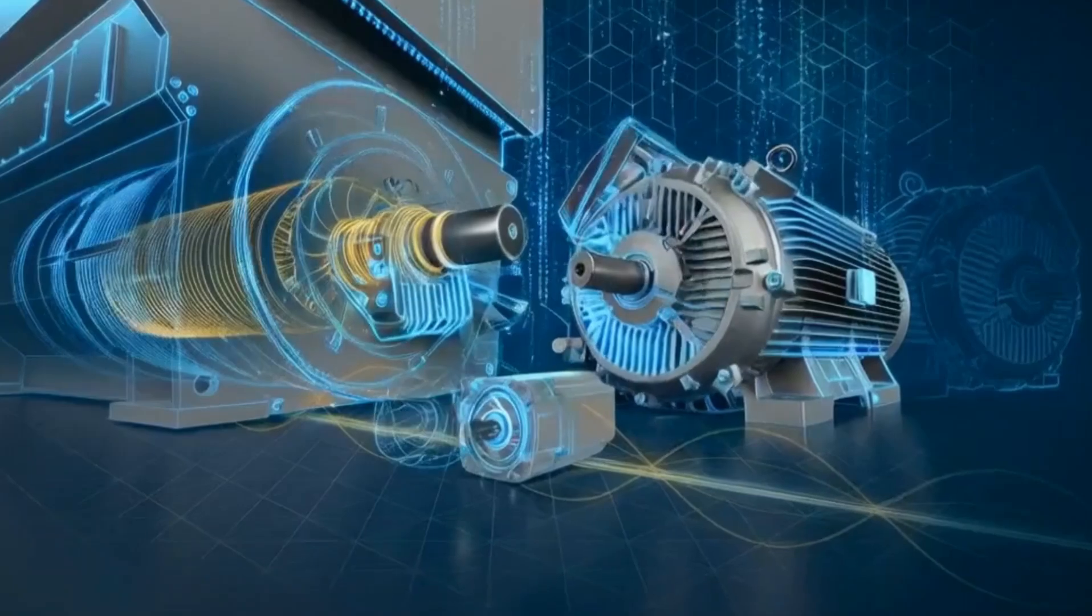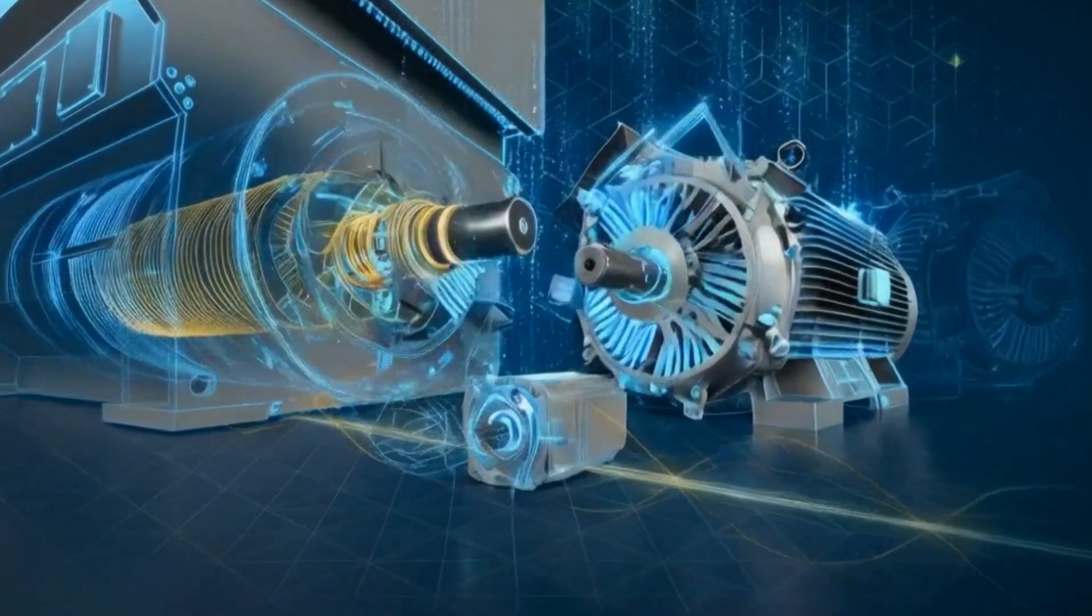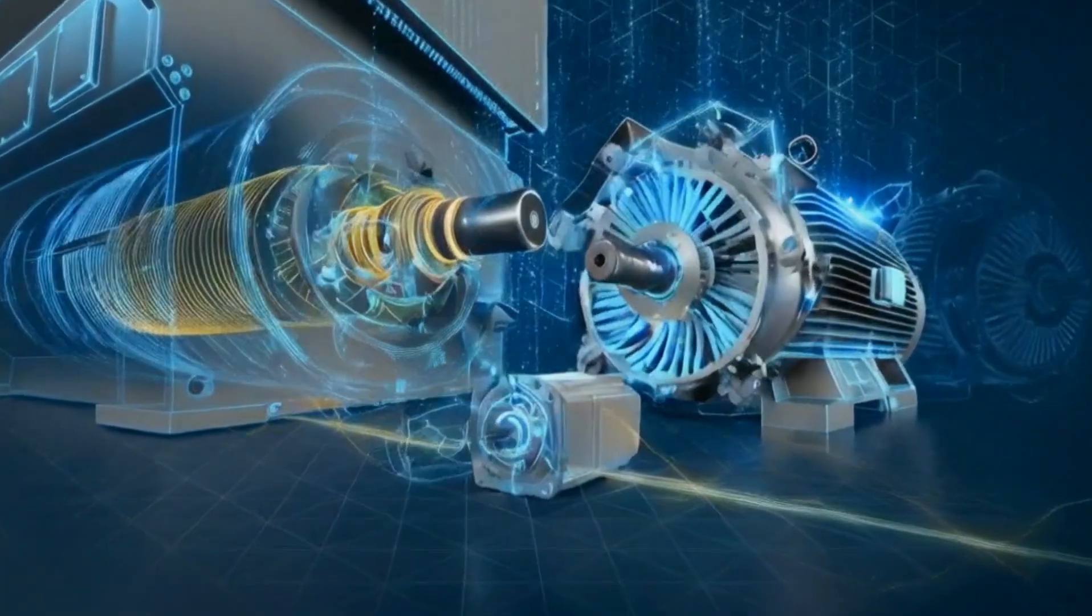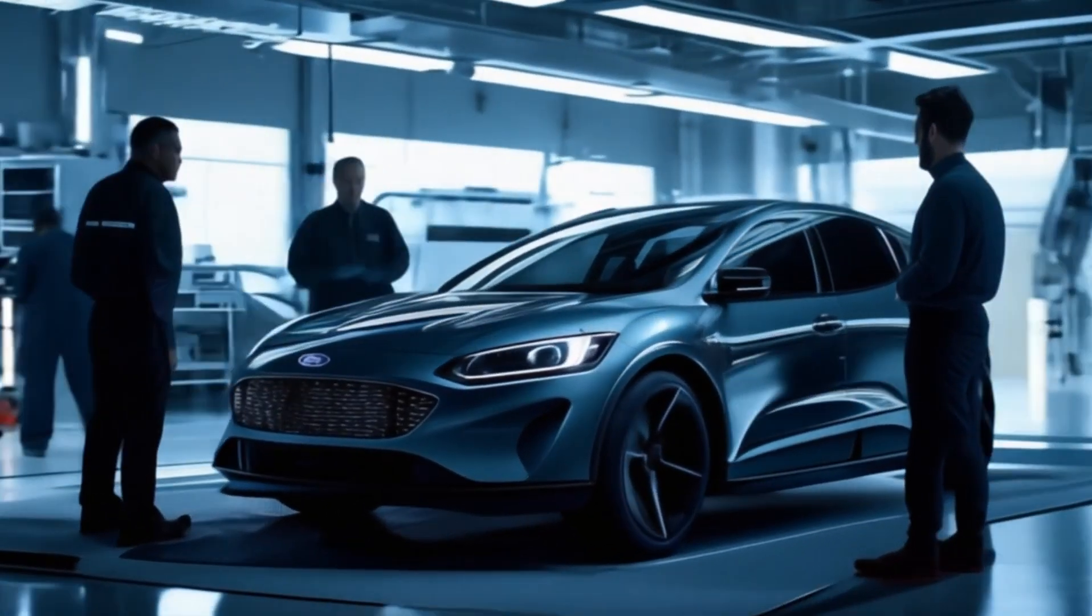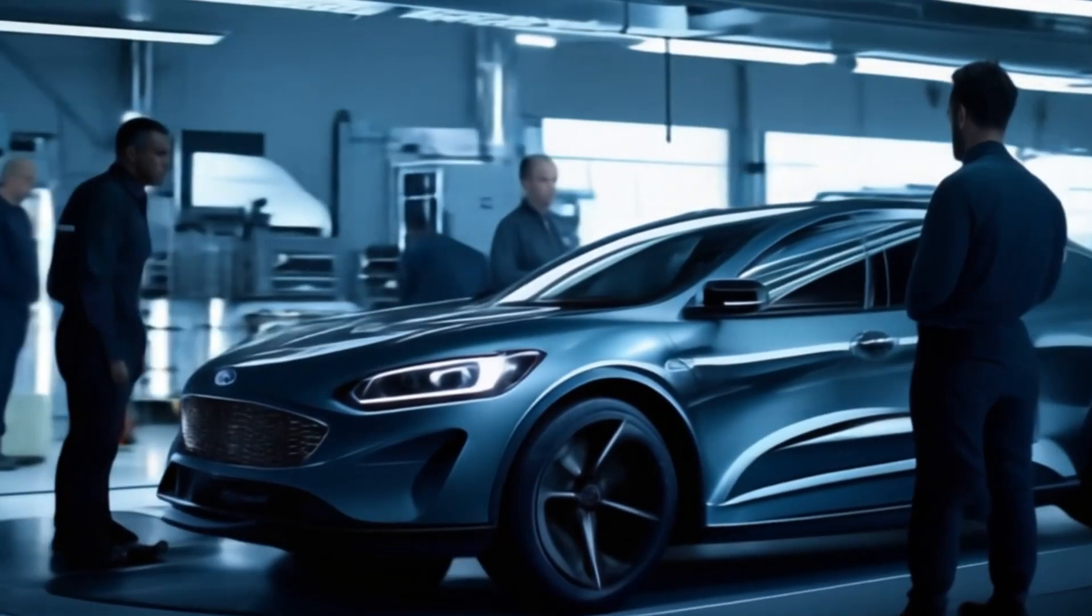That's where Deep Drive, a German company, comes in. They've developed a revolutionary new type of in-wheel electric motor. With a claimed range of 500 miles and a lower cost, this motor could be the missing piece in the puzzle of mass EV adoption.